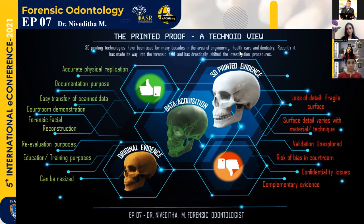The material or the technique used can also impact the model created. For example, in SLS or powder-based methods, the surface may get granular or it may be very brittle. So that is also another limitation of 3D printing.